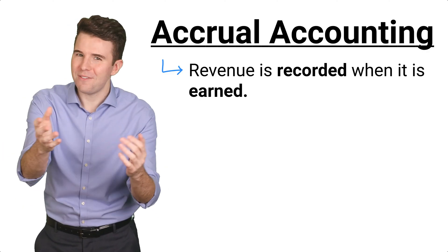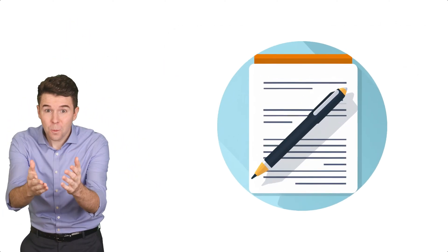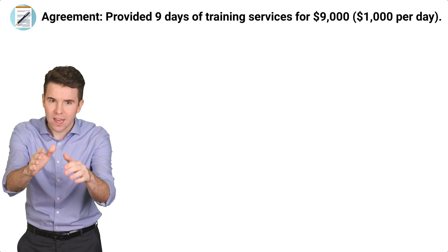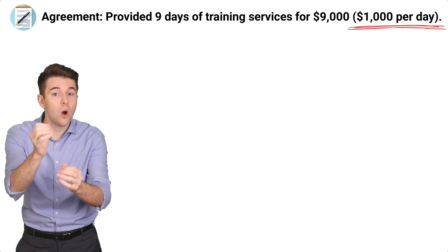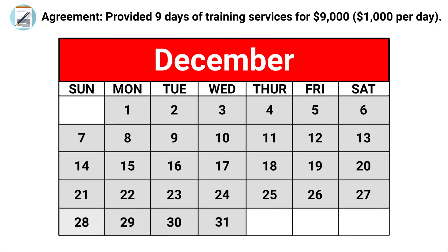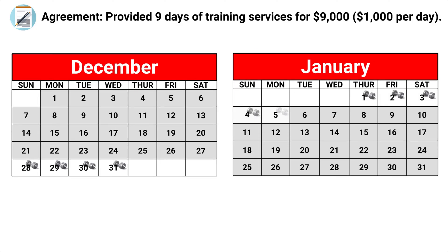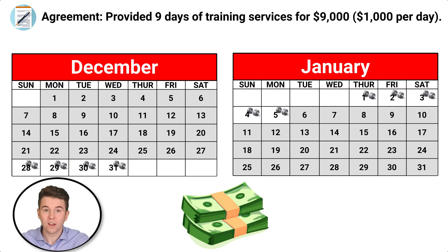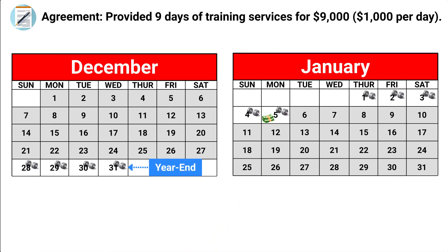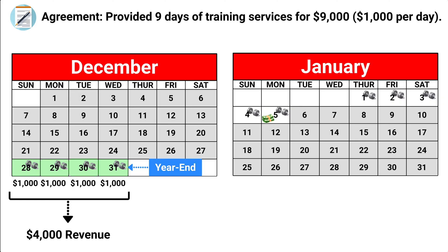Let me show you an example of how this works. Assume we agree to provide 9 days of training services for a fixed fee of $9,000, or $1,000 per day. The training services will be provided from December 28th to January 5th. However, we will not be paid in cash until the work is complete on January 5th. By the end of the year on December 31st, we have provided 4 days of training services and earned $4,000 of revenue.